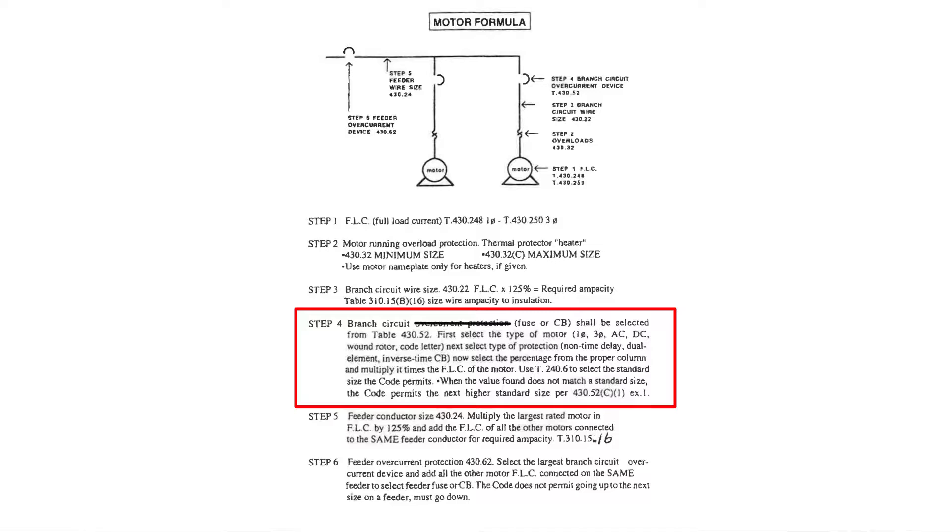Then it says next select the type of protection, whether it's a non-time delay fuse, a dual element time delay fuse, the inverse time circuit breaker, or not listed here as an instantaneous trip circuit breaker - four different things. It says now select the percentage from the proper column and multiply it times the full load current of the motor. Then it says use table 240.6, guess what you got glued in right there, table 240.6, to select the standard size the code permits.